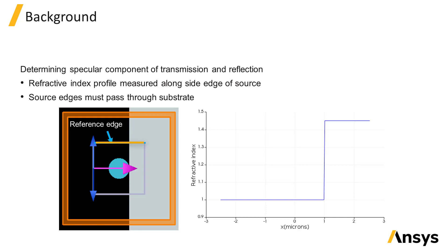Since the refractive index profile at the reference edge is important for this calculation, the side edges of the source should always pass through the substrate and not intersect with the scattering particle.